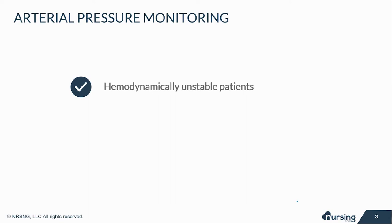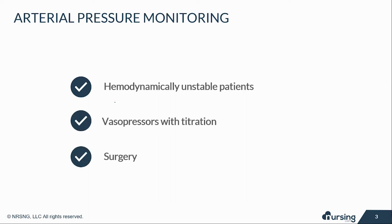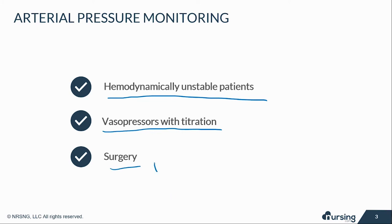So a little bit more about A-lines: why do patients have them and what are the indications? They're usually placed for hemodynamically unstable patients — people on vasopressors who need titration because their pressures are low. Surgical patients in the EP lab also get A-lines, for example for ablations, and they go to recovery with them for monitoring. You don't typically see A-lines on the floor; it's usually for unstable patients.